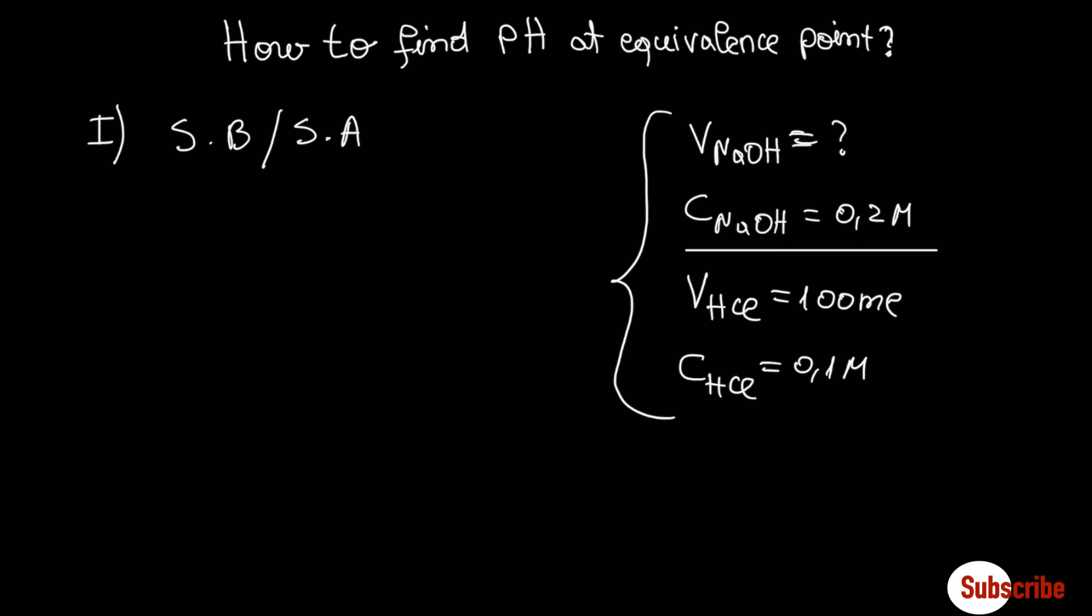Let's move now to the first example. We have the titration of a strong acid with a strong base. Find the volume of sodium hydroxide 0.2 molar required to neutralize 100 mL of hydrochloric acid 0.1 molar. What is the pH of the solution at this point?